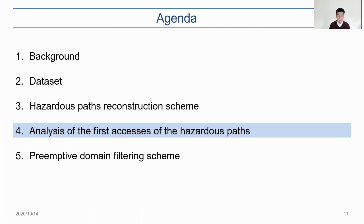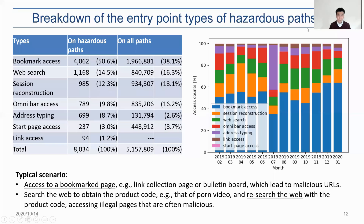We analyze the first accesses of the hazardous path. The table in this slide shows the breakdown of entry point types of hazardous paths. The biggest share was bookmark access, followed by website, session reconstruction, omnibar access, address typing, and start page accesses. Please note that link access appears in the table as an entry point type, but this is because we could not find proper previous accesses — most likely because we analyze logs monthly, so accesses spanning two months cannot be traced properly. We left these access records untraced for ease of analysis.